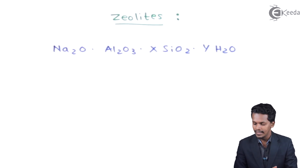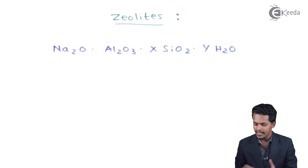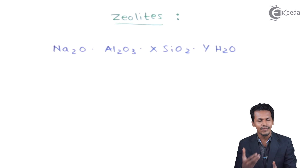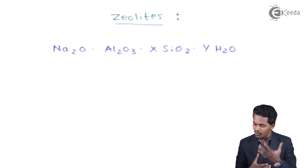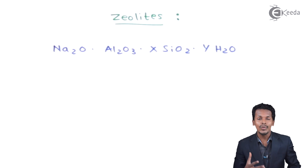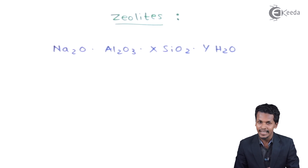Zeolites are also known as permutites. They are used in the softening of hard water and have various applications in chemistry — for example, they can be used as catalysts in various reactions. So zeolites are not only found as stones or rocks, but they also have very wide applications in chemistry.